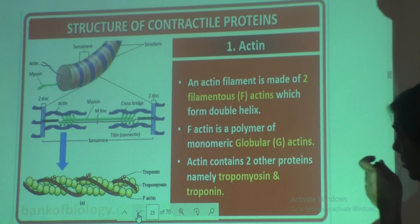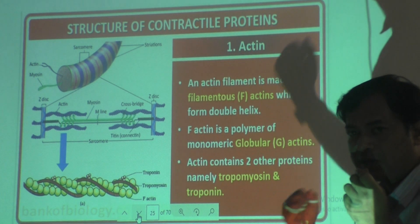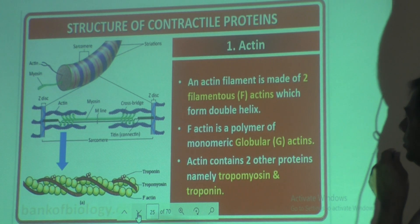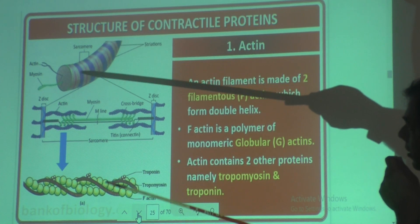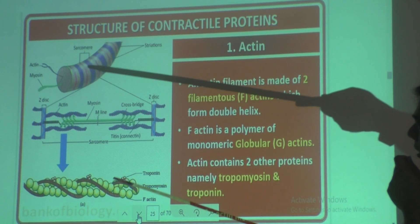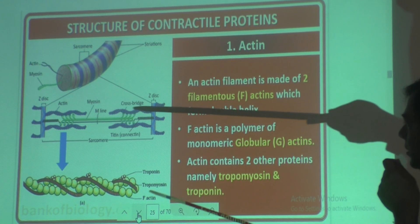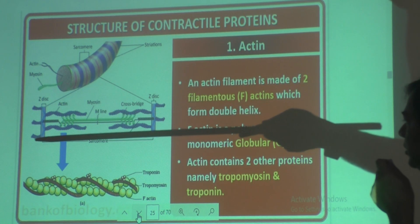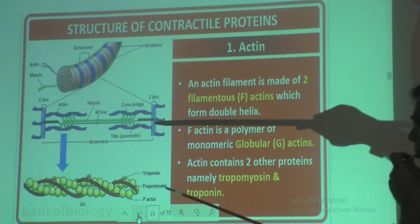Actin and myosin proteins, which are required for contraction and relaxation of muscles, are also called contractile proteins. This is a myofibril, and this red color line is the Z line. In between two Z lines, the space is called sarcomere. This is one Z line and this is the other Z line — the area in between is called sarcomere.